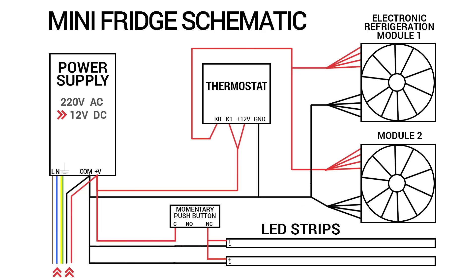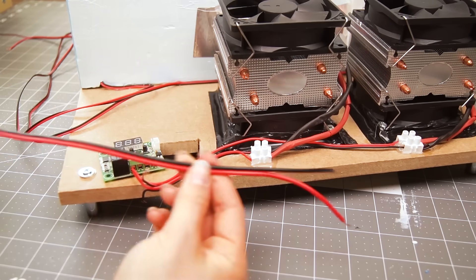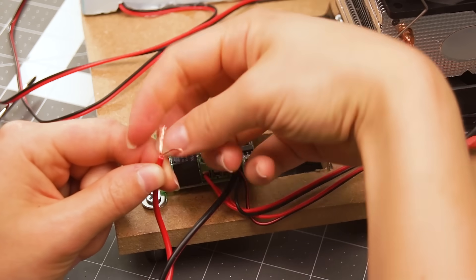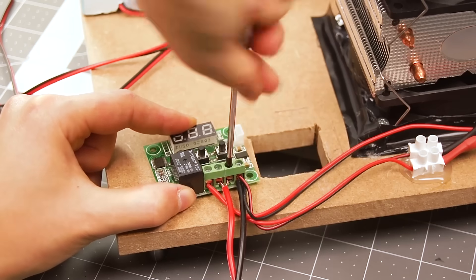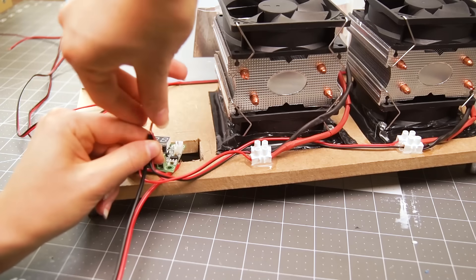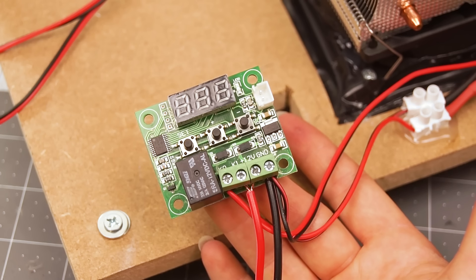It's time to hook the modules up with the thermostat and I made a schematic that looks like this which you also can find down in the description. I hooked up both the modules and a separate cable that will go to the power supply. As you can see I'm splitting that wire in two like this so the power supply can power both the thermostat and the modules. All of them are connected to a common ground. It's shown quite clearly on the schematic.